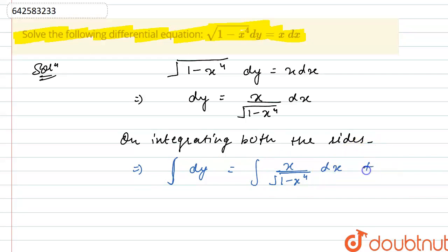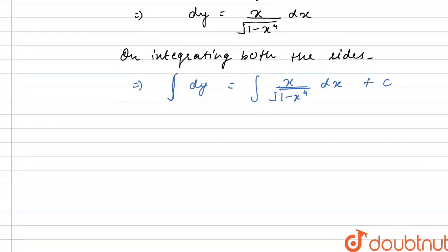Plus we will get some constant, let's say c. Now for solving this integral x divided by root over of 1 minus x power 4, what we will do is simply put x square.